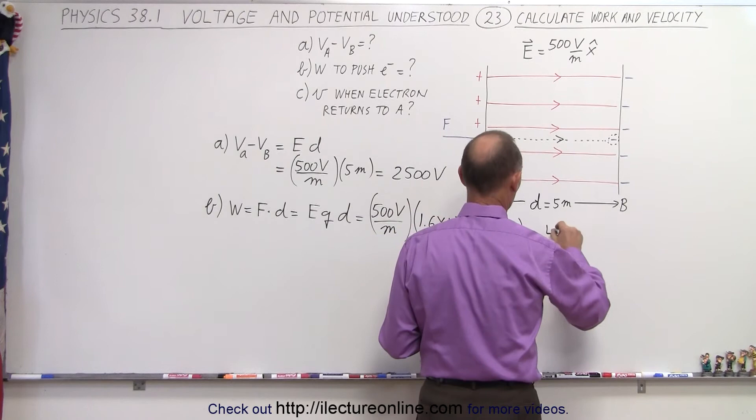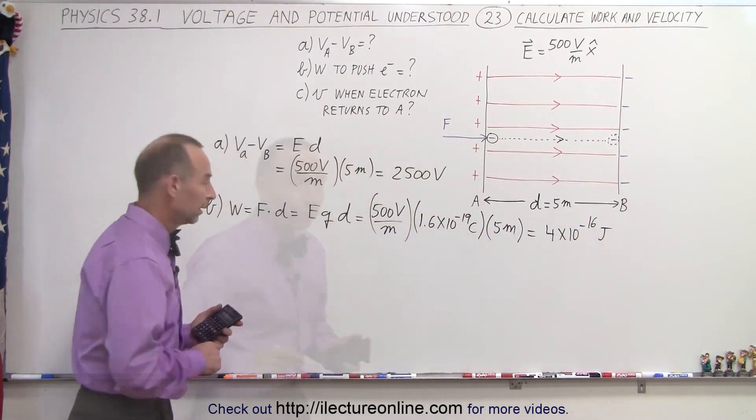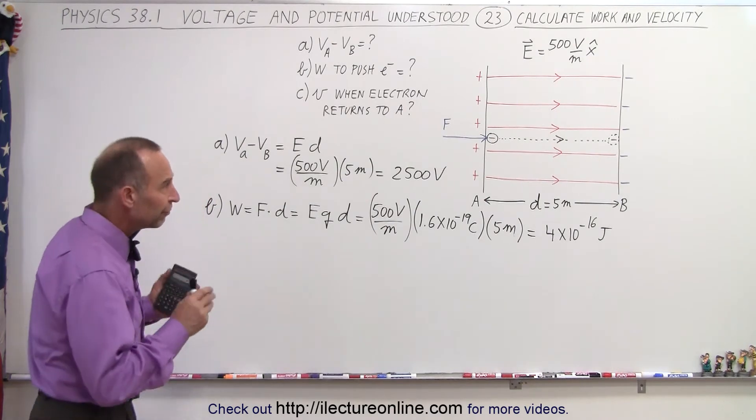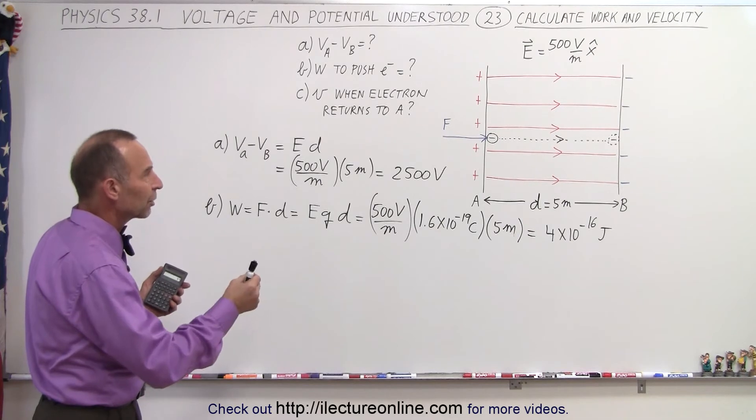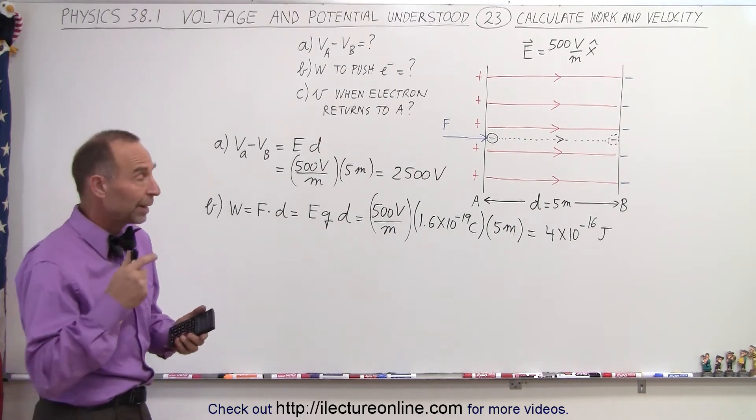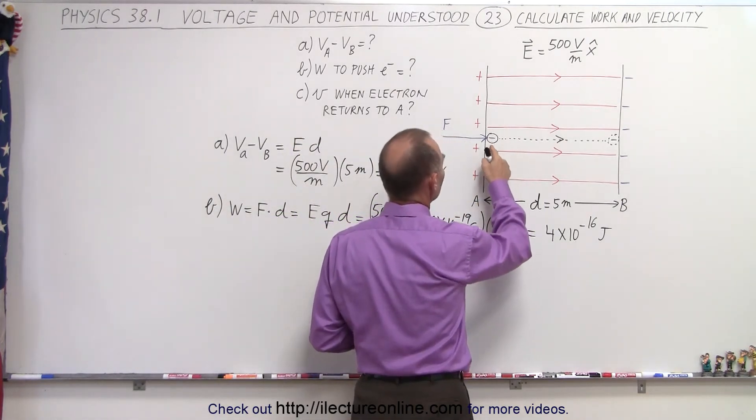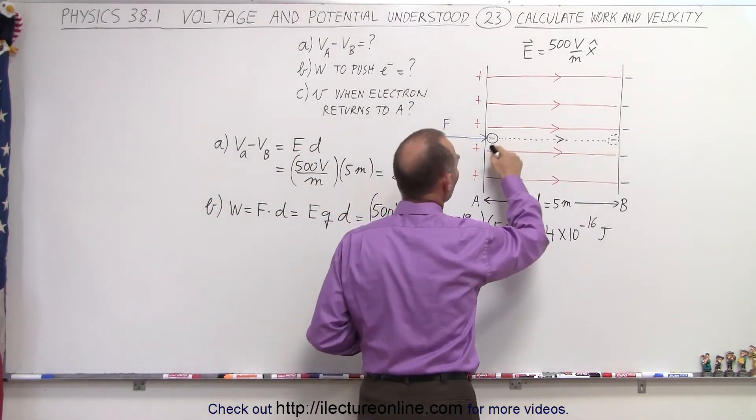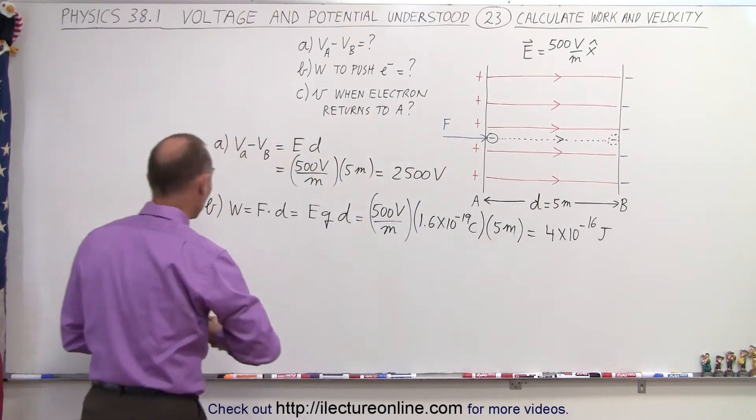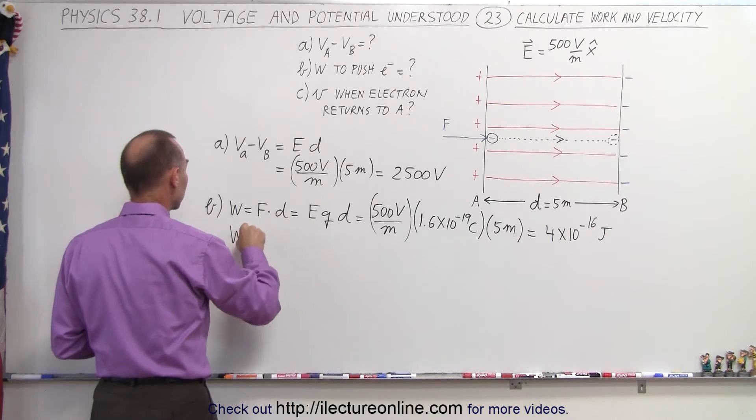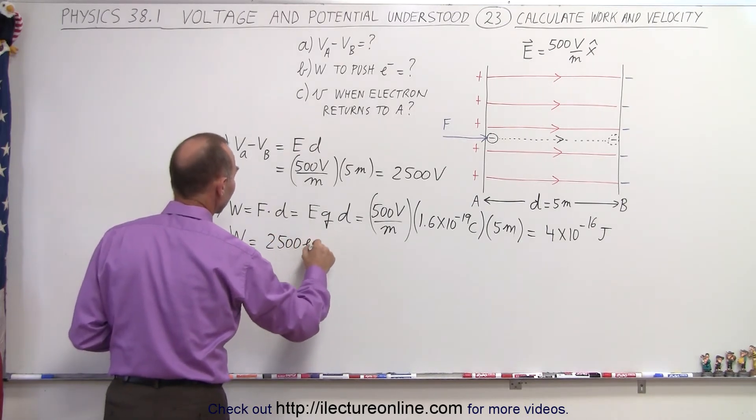So that's 4 times 10 to the minus 16 joules. Now we also could have found the amount of work required to move an electron across in terms of electron volts, because we know by definition an electron volt is the amount of work required to push an electron across the potential difference of 1 volt. Now in this case, the potential difference is 2,500 volts, so we could have also said that the work is equal to 2,500 electron volts.